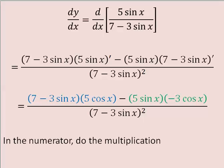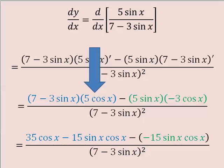In the numerator, you have some multiplication to do. When I distribute the 5 cosine x, I get 35 cosine x minus 15 sine x cosine x.